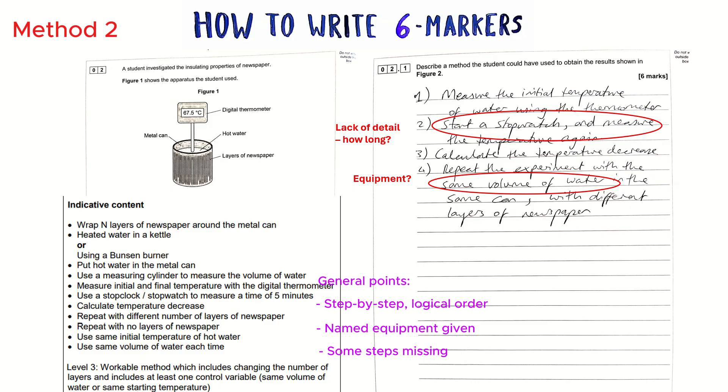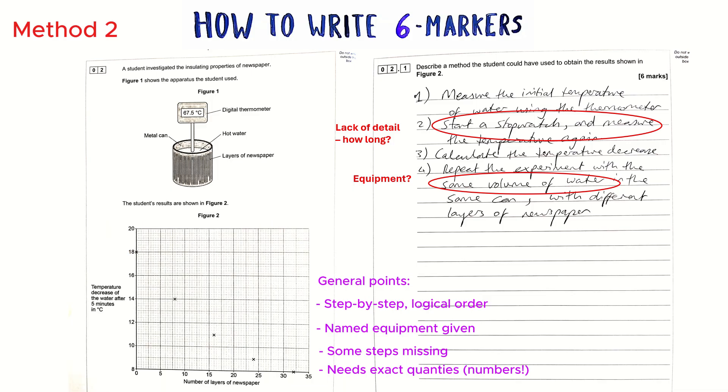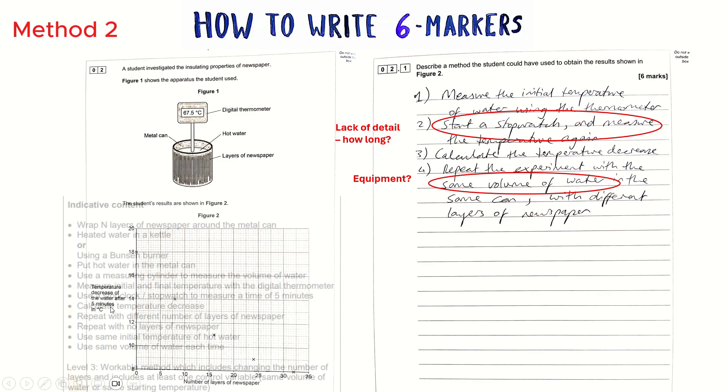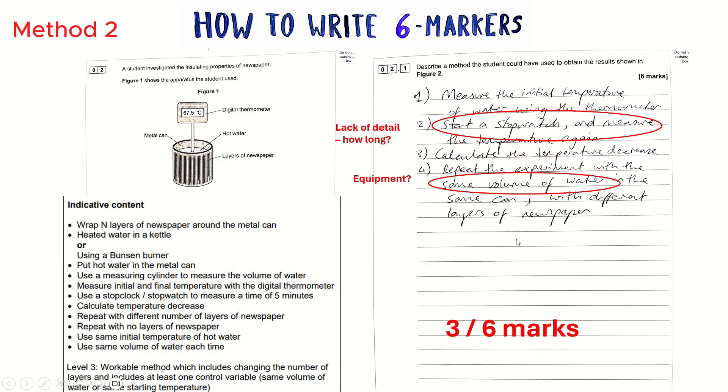They talk about calculating a temperature decrease and repeating with the same volume of water but haven't said how to do that. If we look at the mark scheme they've mentioned some equipment and got some of the marks, but they haven't been specific enough with certain areas. They haven't said how to get the hot water hot, how to measure the exact volume to keep it the same, or the time to wait. If you look at the question on the graph, the y-axis specifically says temperature decrease after five minutes, so you need specific numbers and units.